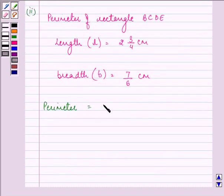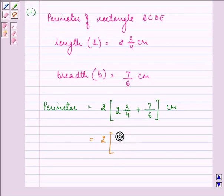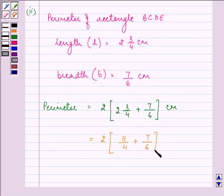So we have 2 bracket 2 and 3 by 4 plus 7 by 6. That is equal to 2. Now here we have 11 by 4 plus 7 by 6. We have converted this mixed fraction into an improper fraction.